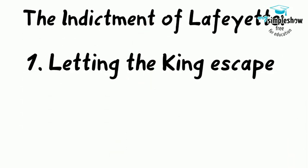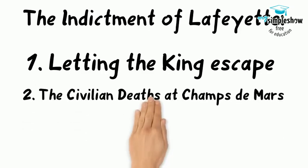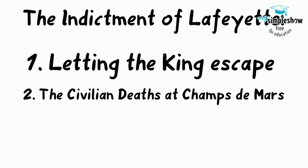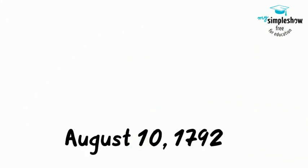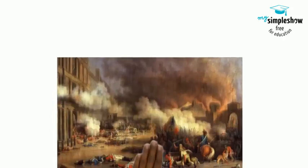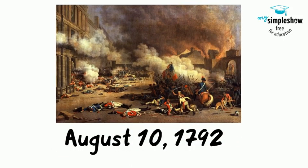Instead, Lafayette found himself indicted by the assembly for his crimes against the revolution: letting the king escape, ordering the firing on civilians at the Champ de Mars, and deserting his troops to speak to the assembly. The Jacobins and the sans-culottes had also reached their limit with Louis, and they set out to storm and destroy his palace at the Tuileries. The royal family fled and took shelter in the assembly begging for help, while the mob took over the palace and killed 800 Swiss guards and members of the household.